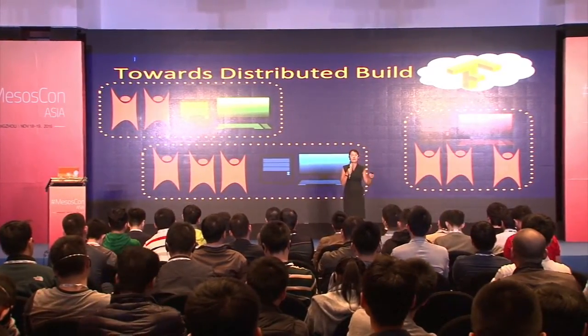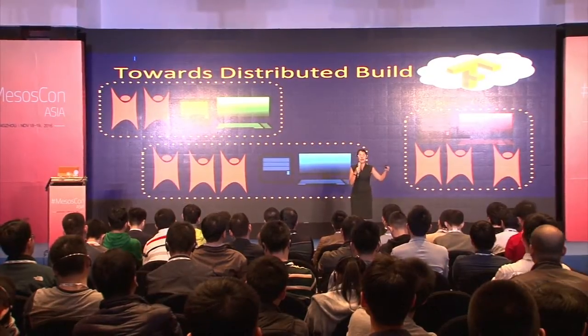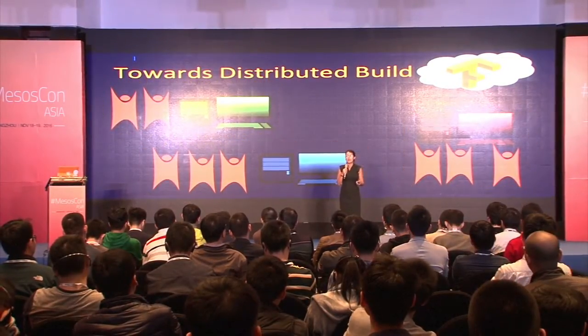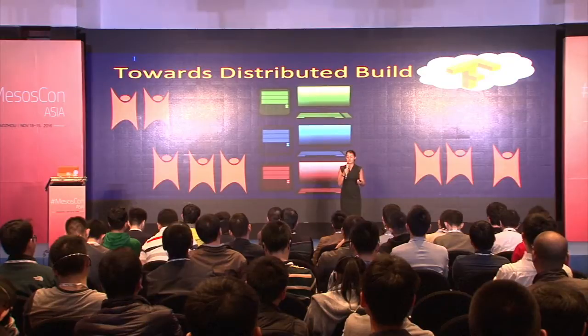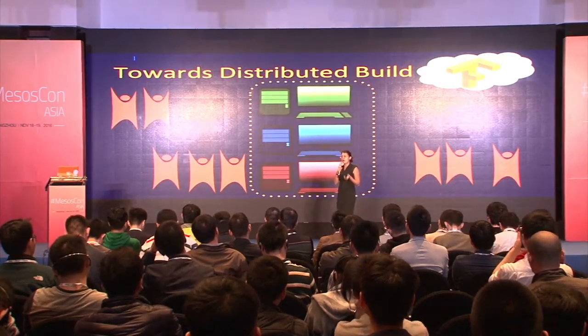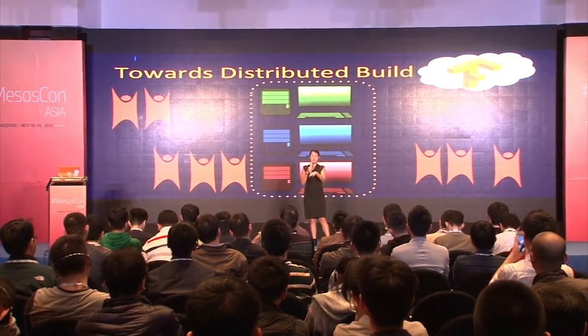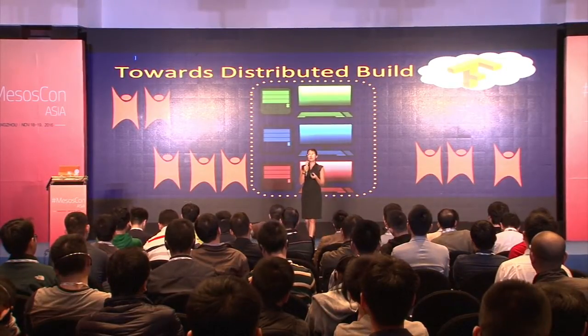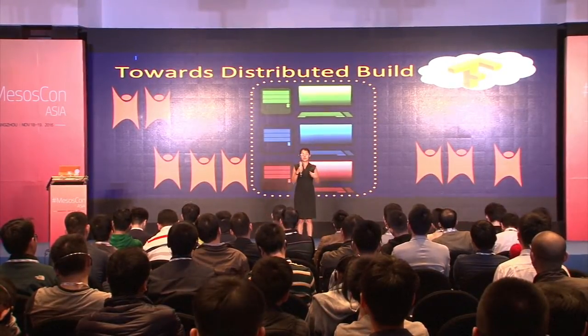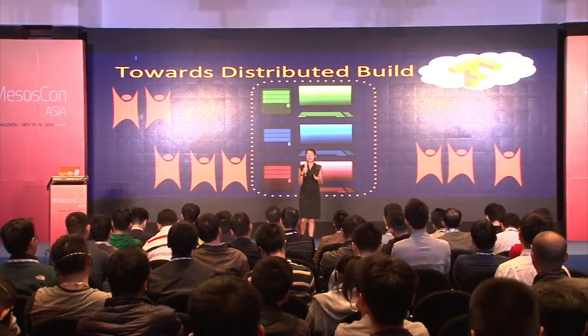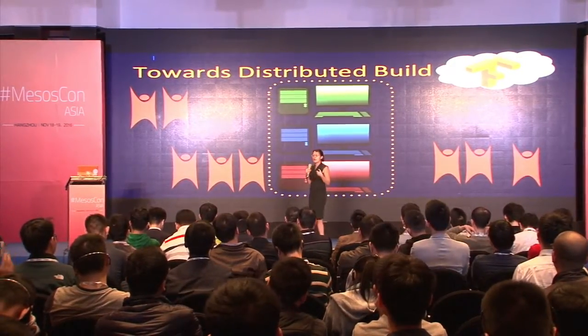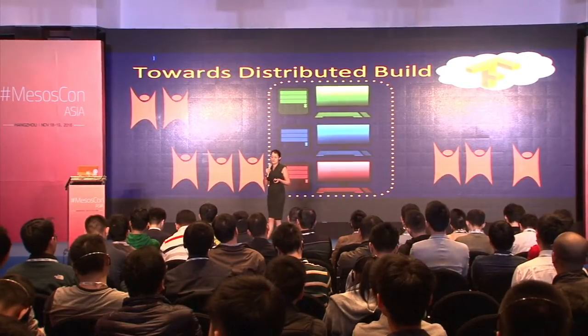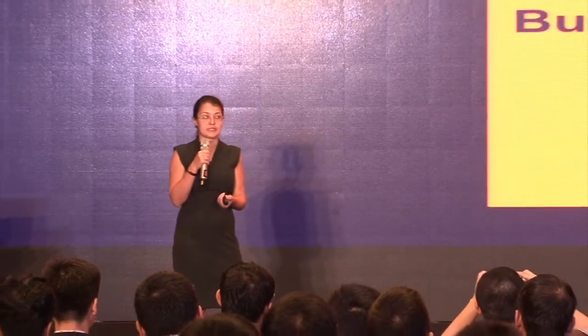Instead of having every team set aside their own machine and worry about maintaining it, we create a shared infrastructure. The team maintains all the machines, ensures the best possible user interface and experience, adds new features, and maintains availability for the different teams in the company. The system I'm talking about today is called BuildRabbit at Google, and it's a distributed build system.